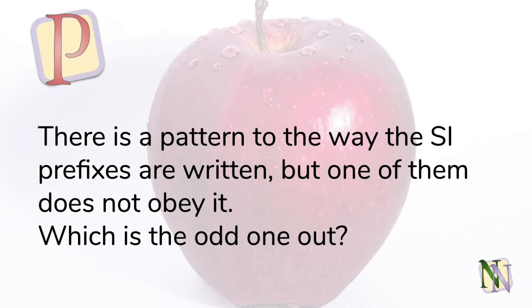Here is the puzzle from the beginning of the video. You may have noticed that all of the prefixes for negative indices such as nano use lowercase letters while the prefixes for positive indices such as mega use uppercase. The exception is kilo which is a lowercase k even though it means 1,000.